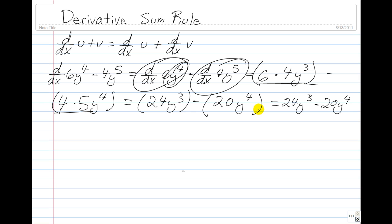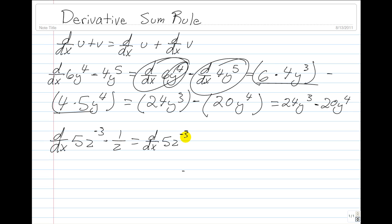Example 2: the derivative of 5z to the negative 3rd minus 1 over z. We can rewrite this as the derivative of 5z to the negative 3rd minus the derivative of z to the negative 1.